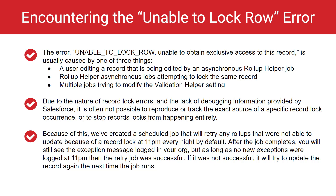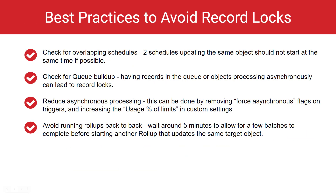When it is active, it will retry any records that were blocked by that exception at 11pm every night by default. After the job completes, you will see the exception message logged in your org. But as long as no new exceptions were logged at 11pm, then the retry job was successful. If it was not successful, it will update the record again the next time the job runs. Here are some best practices to avoid record locks.